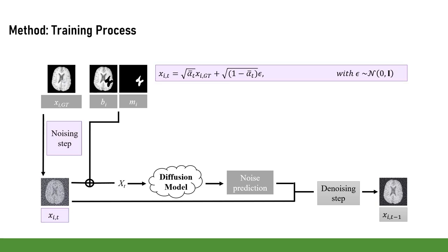We take a random time step t and compute a noisy image xᵢₜ from the ground truth slice xᵢ_GT. The final goal is to predict the slightly denoised image xᵢₜ₋₁. We add the slice context information of our baseline image bᵢ and the mask mᵢ through channel-wise concatenation.